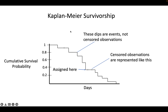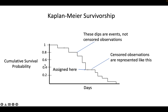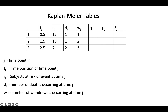Kaplan-Meier curves are able to account for censoring — that's what these dashes are here. A Kaplan-Meier table can be used to ultimately come up with what's plotted on the y-axis. I'm going to go over how each of these points are calculated.